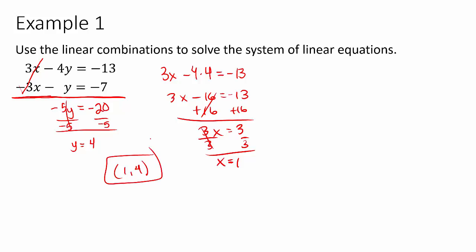So x ends up being 1, y was 4, and so together that makes the point (1, 4). That's as easy as it can be. Sometimes they'll have it set up to where as soon as you add them, the variable will cancel out, but not all the time. So let's look at some cases where they don't immediately eliminate and figure out what to do.